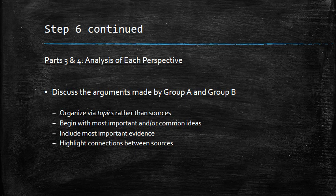Parts three and four of the paper are where you give the analysis of each perspective — part three for Group A, part four for Group B. This is where you discuss the arguments made by each group, organized via topics rather than sources. Begin with the most important and/or most common ideas — the most foundational ones. In the robot rights example, I began with the ethical question since that seemed to be the root of the argument, and then all the various ways that ethical claim is developed through economics, history, and scientific evidence.